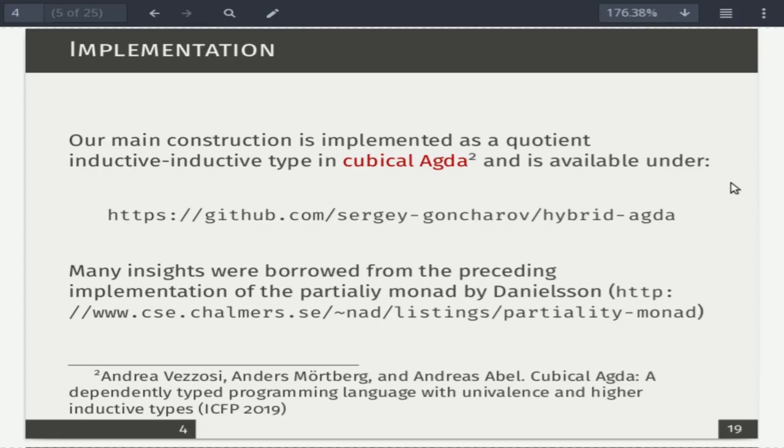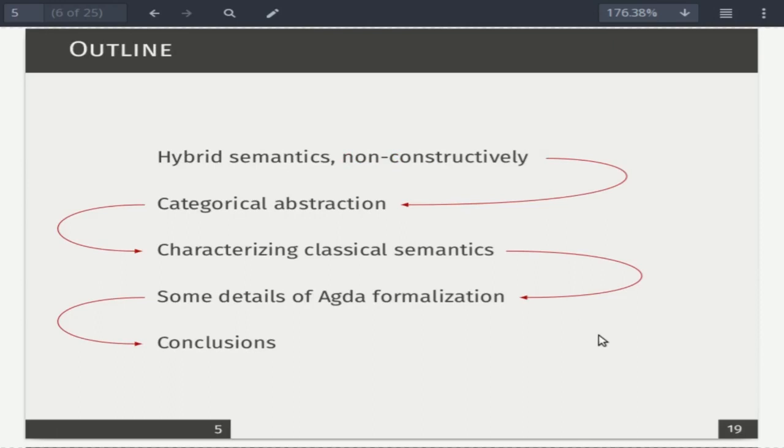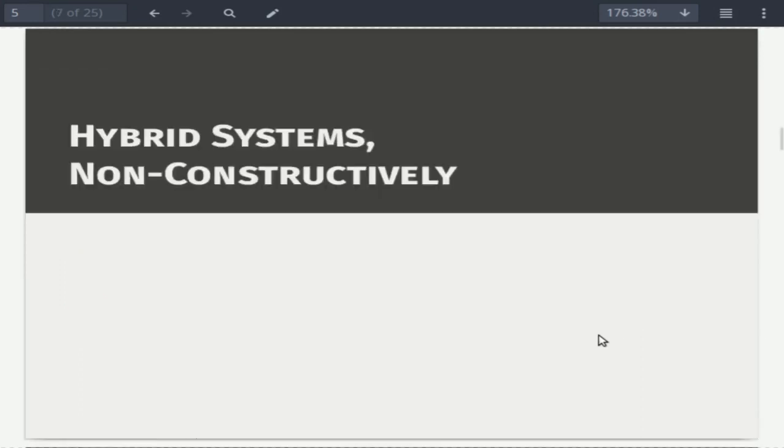Right. So the way I would like to proceed would be as follows. So first I outline the hybrid semantics not assuming constructiveness, and then I show our categorical abstraction over this intuition, then to show that this result is in agreement with what we expected. I provide a characterization of this result in different terms, again under classical identity assumptions, and then it shows some very few subtleties of our formalization and then conclusions.